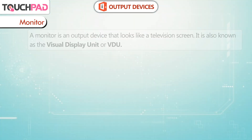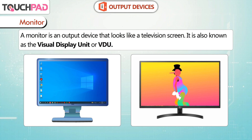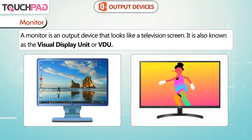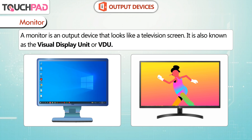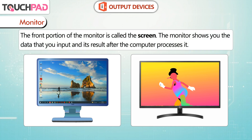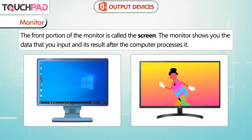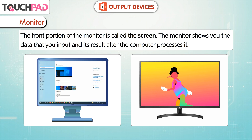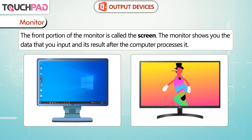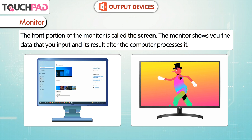Monitor. A monitor is an output device that looks like a television screen. It is also known as the Visual Display Unit or VDU. The front portion of the monitor is called the screen. The monitor shows you the data that you input and its result after the computer processes it.